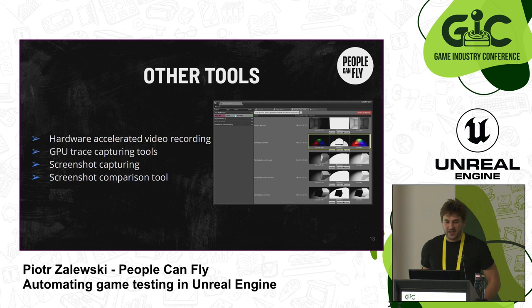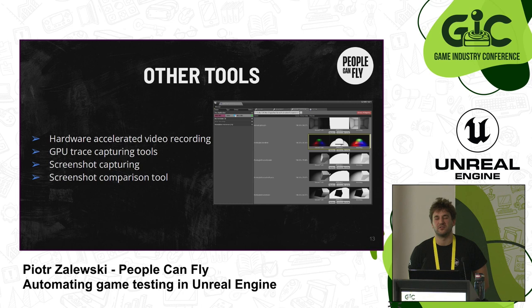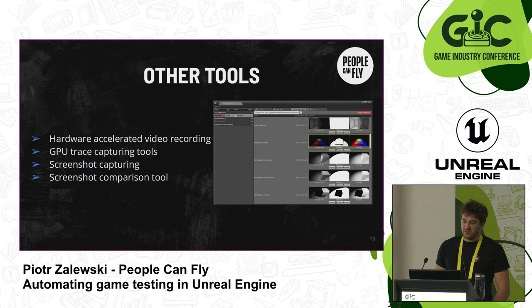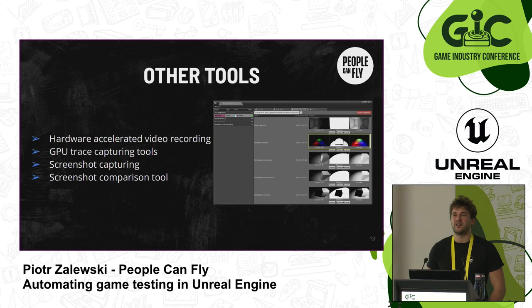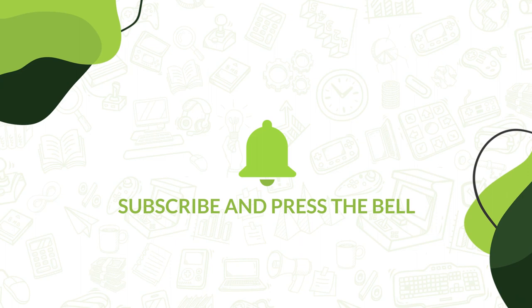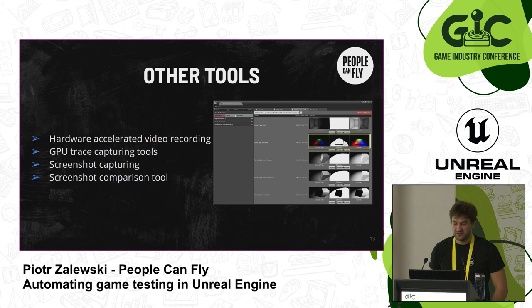Other tools available in the framework include hardware-accelerated video recording — if you enable the Pixel Streaming plugin on Windows you will have access to video recording. On consoles like PlayStation they work quite neatly. On Xbox it's limited to recording only about six minutes of playtime, and you cannot do anything about it unless Microsoft changes it. You can also issue GPU traces, capture screenshots, and compare them — if you have an assumption that the screenshot should look a certain way, you can compare it and base the test results on that.